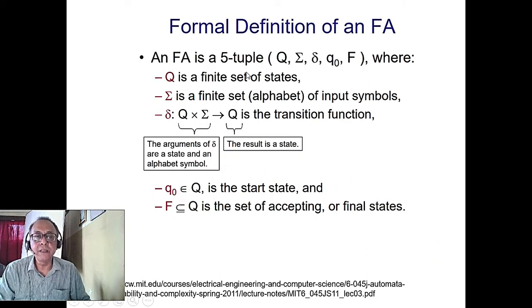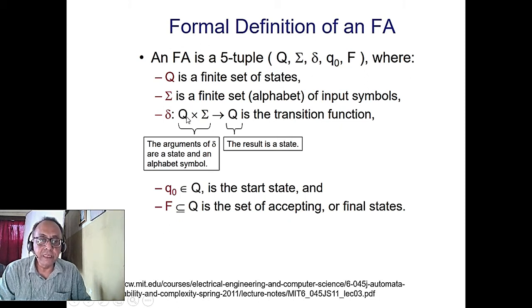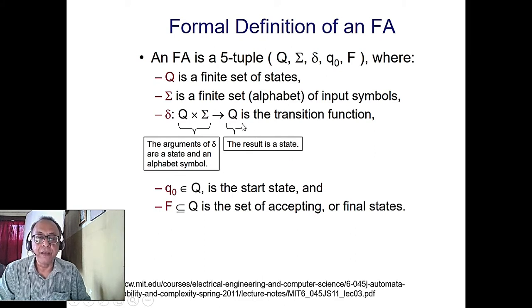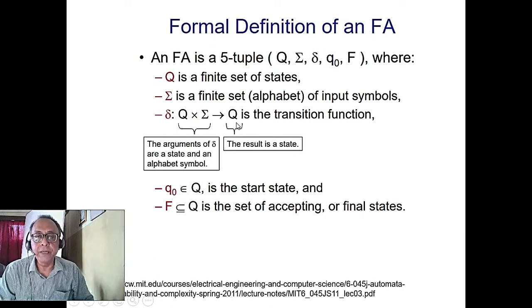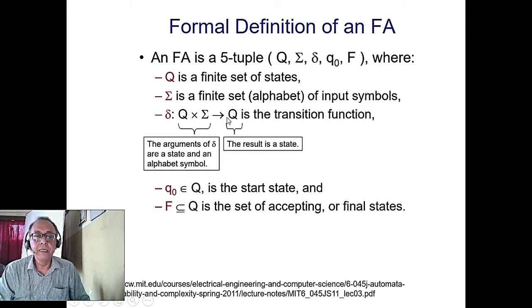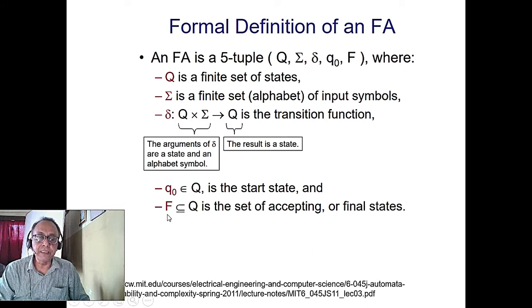The formal definition of a DFA: Q is the finite set of states, Σ is the input alphabet, and the transition function δ maps Q × Σ → Q. For NDFA, it would map to 2^Q (the power set). q₀ is the initial state and F is the set of one or more accepting/final states.